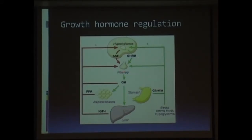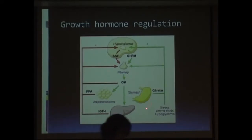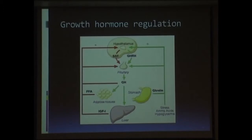Negative feedback is due to somatostatin released from the hypothalamus, and also excess of free fatty acids, which have a negative feedback at both pituitary and hypothalamic levels. A lot of neuropeptides and neuroregulators have a role to play in stimulation as well as inhibition of growth hormone release, which is the basic principle of various pharmacological tests done for growth hormone estimation.